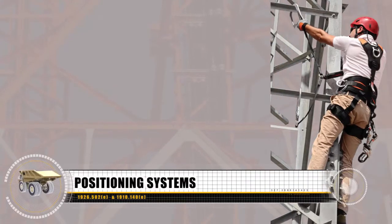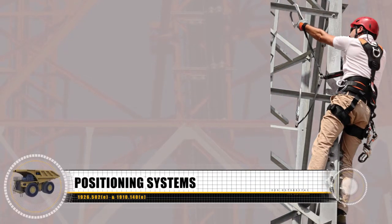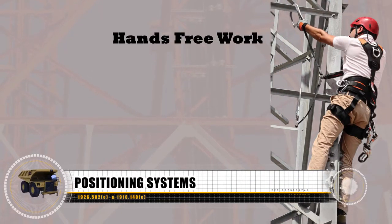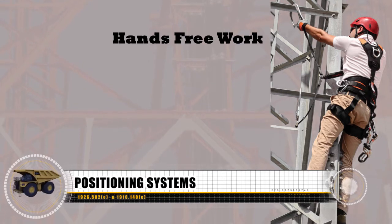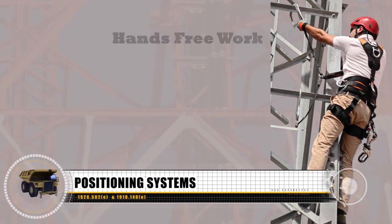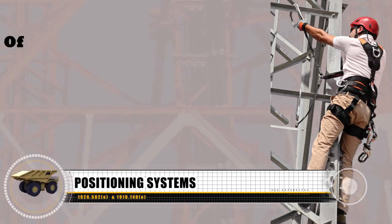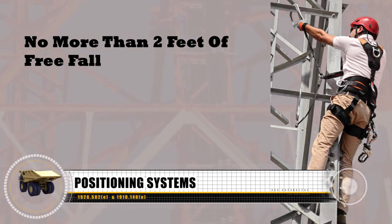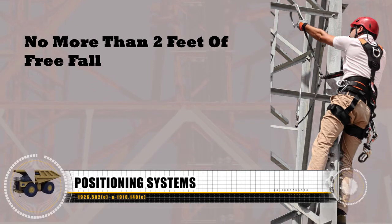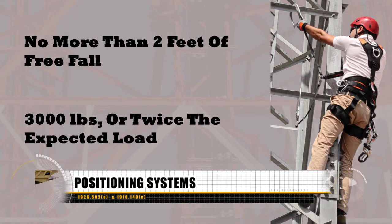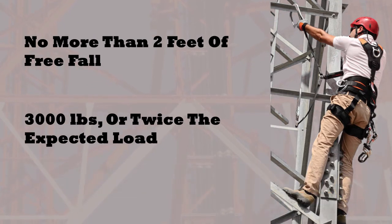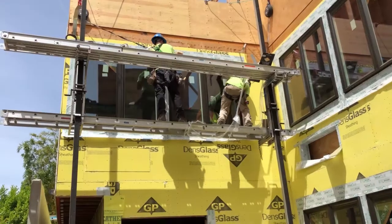Positioning devices allow workers to connect to an anchorage point and work with both hands free. The positioning device must allow no more than 2 feet of free fall, and it must be able to hold 3,000 pounds, or twice the expected load, whichever is greater.